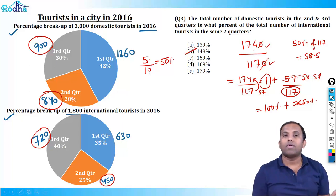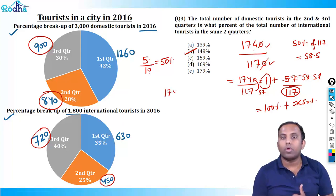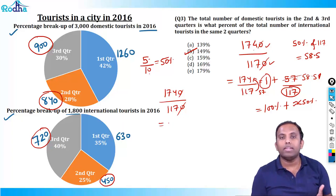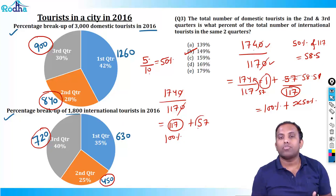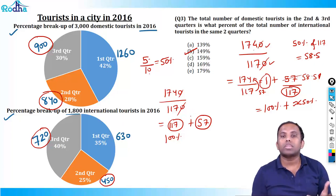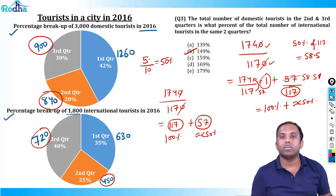Now 57 by 117 — is it around half? 50% of 117 is 58.5, and 57 is just less than 58.5, so just less than 50%. So total is 100 plus approximately 49%, giving around 149%. That's the answer.